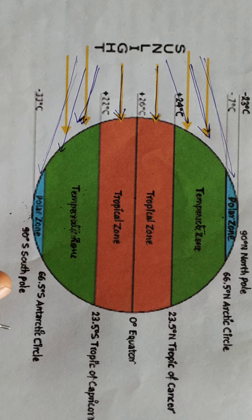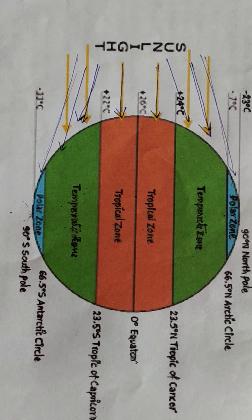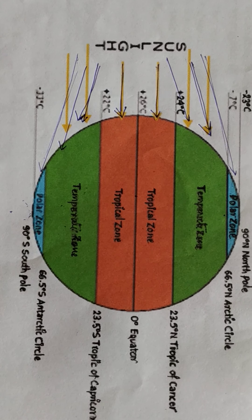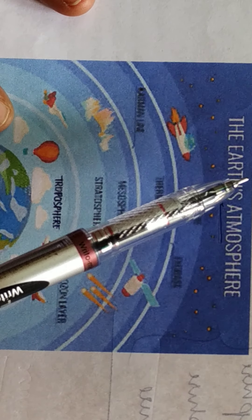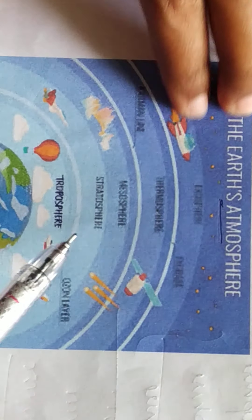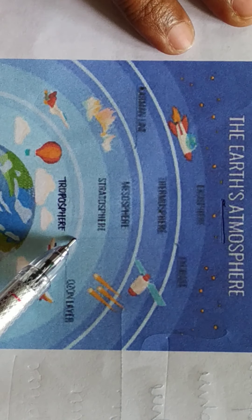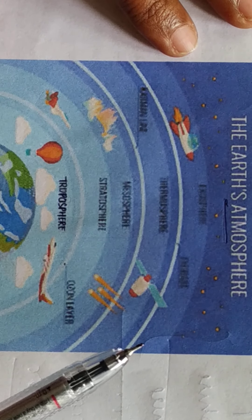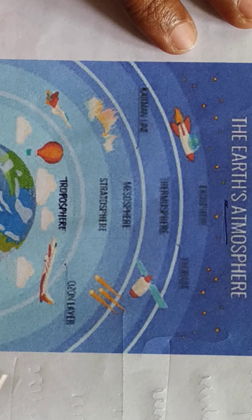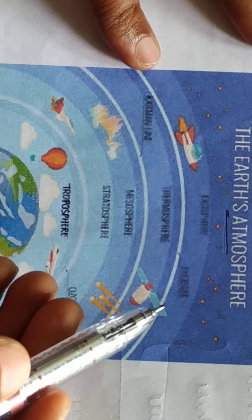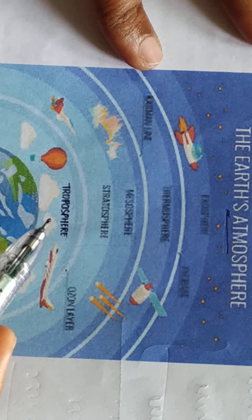Now let us know about another sphere, that is atmosphere. Atmo means air. Our earth is surrounded by air and it has many layers. See this picture — it shows the layers of atmosphere. Air can't be seen but we feel it when it blows. Air is a mixture of gases. Another sphere ke baare mein jaante hai jiska naam atmosphere hai. Hamaara earth hawa se ghira hoa hai, ismein kai paraten hai.